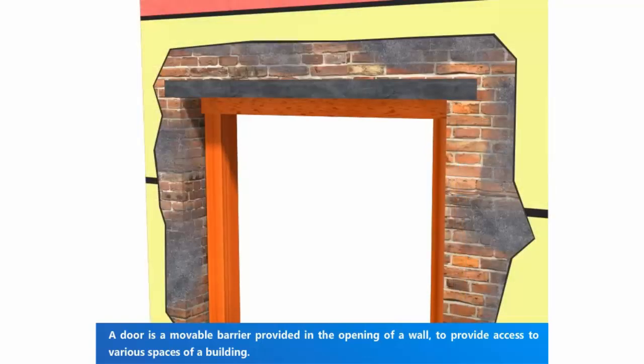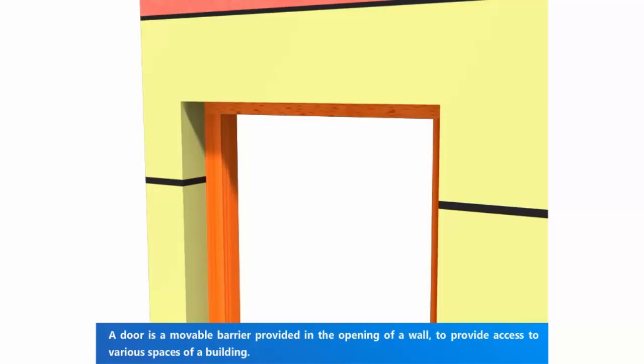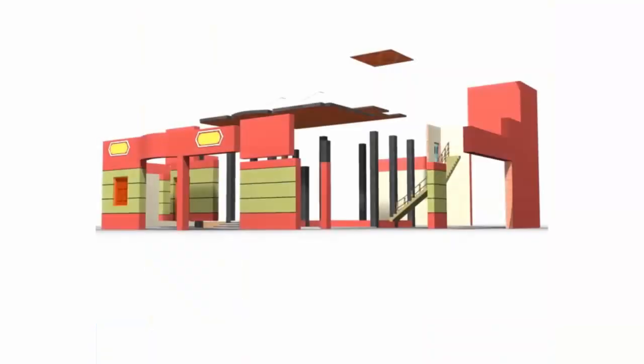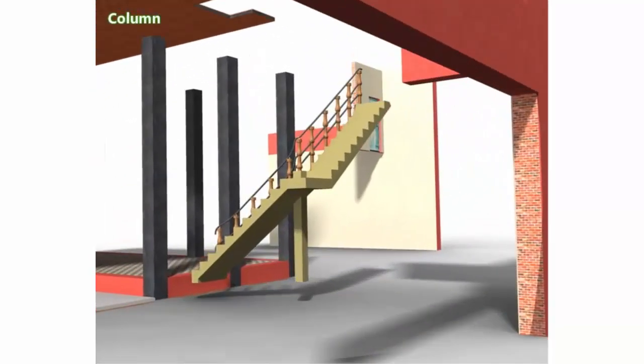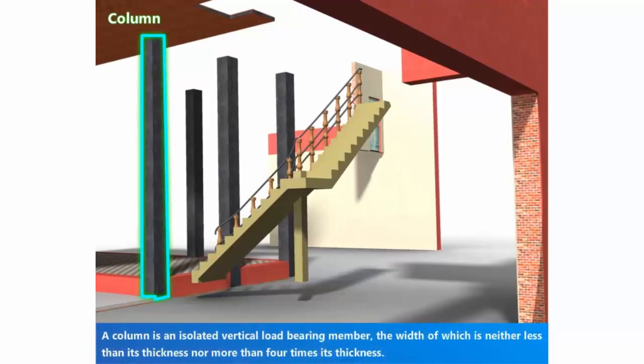Column. A column is an isolated vertical load-bearing member, the width of which is neither less than its thickness nor more than four times.